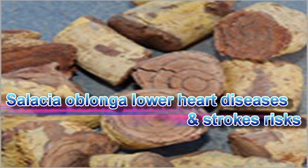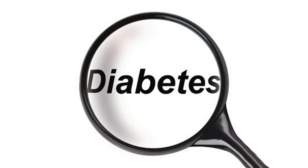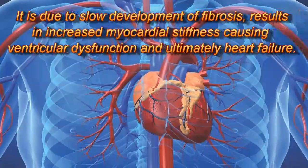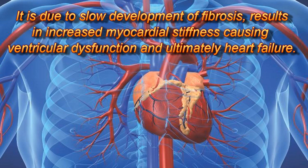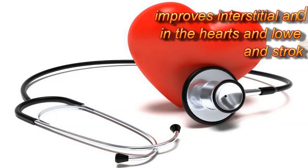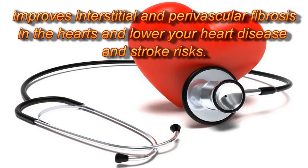Salatia oblonga lowers heart disease and stroke risks. Diabetes has a greater incidence of cardiovascular disease than others, due to the slow development of fibrosis, which results in increased myocardial stiffness causing ventricular dysfunction and ultimately heart failure. Salatia oblonga improves interstitial and paravascular fibrosis in the hearts and lowers your heart disease and stroke risks.